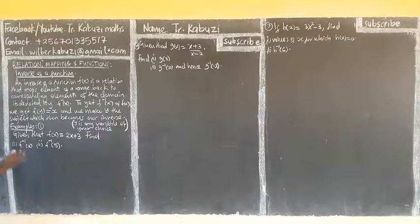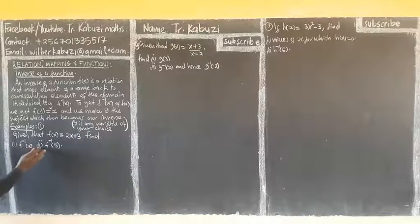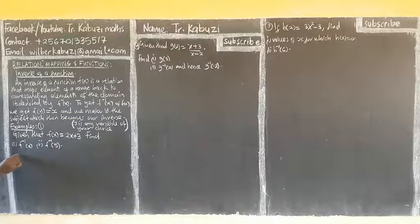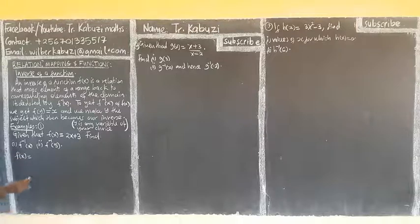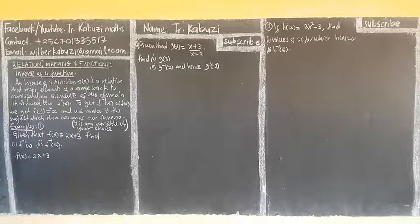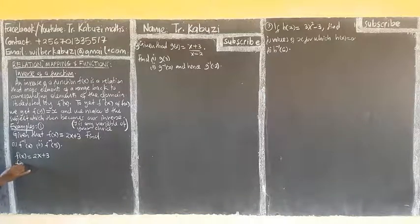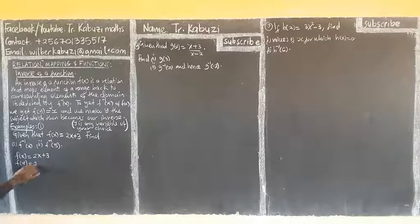So from here, given that f of x is equal to 2x plus 3, find the inverse of this and then find f inverse of 5. We start: f of x is equal to 2x plus 3. What I do, I now bring in the value of y. So if I put here y where there is x, this one becomes 2y plus 3.